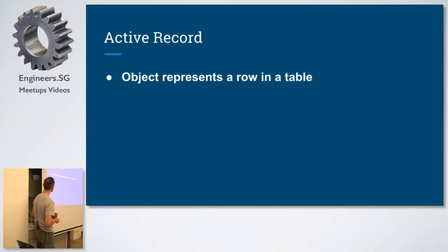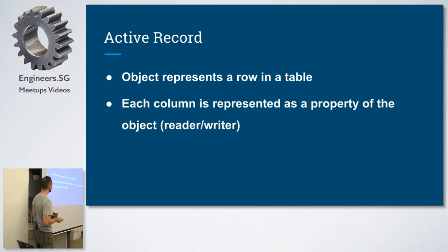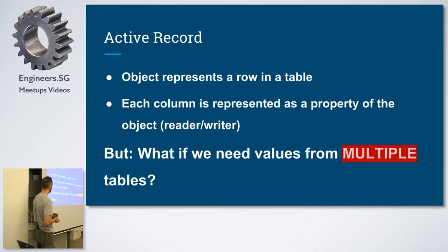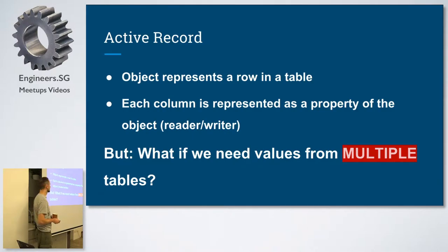The rough explanation is that it's an object that wraps a row in a database table or view, and it encapsulates the database access. It also adds domain logic on that data. We're going to be mainly concentrating on the database access and less on adding domain logic. In a nutshell, one object represents one row from the table, and each column will have a property — reader and writer — on that object.